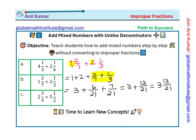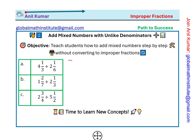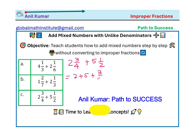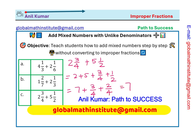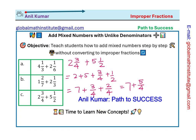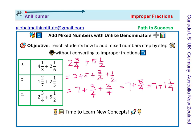Now let's apply this strategy to the last question: 2 and 3/4 plus 5 and 1/2. First step: add 2 and 5. Second step: add 3/4 with 1/2. So 2 and 5 is 7. For 3/4 and 1/2, we convert 1/2 to 2/4. So we have 7 plus 3/4 plus 2/4. Now 3 plus 2 is 5, giving us 5/4. But 5/4 is an improper fraction, which equals 1 and 1/4. So we write this as 7 plus 1 and 1/4.